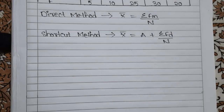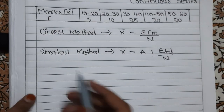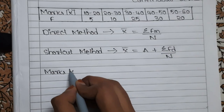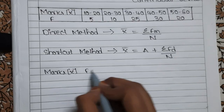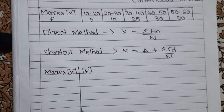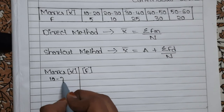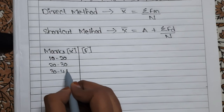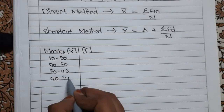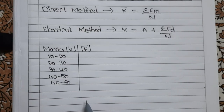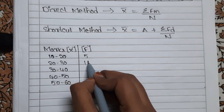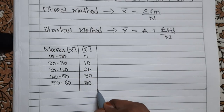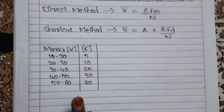So let us get started. Whatever they have given in the question, that only we have to take first. So let us take marks, which we assume as X, and then we have frequency F. The marks are 10 to 20, 20 to 30, 30 to 40, 40 to 50, and 50 to 60. The frequencies of those marks are 5, 10, 25, 30, and 20. Whatever they give you in the question, that only you have to take in the solution also.